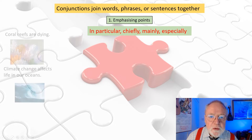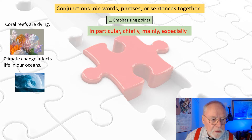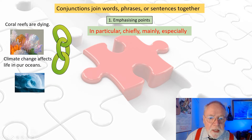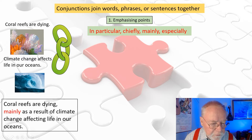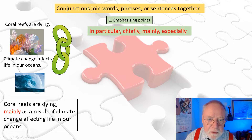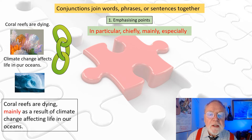If we look at these two sentences: 'Coral reefs are dying' and 'Climate change affects life in our oceans,' we can join them together quite easily: 'Coral reefs are dying, mainly as a result of climate change affecting life in our oceans.' So you are not constantly repeating the same word, which is not a good idea.